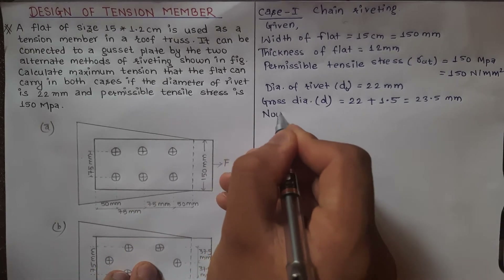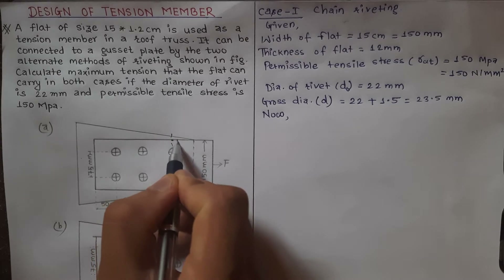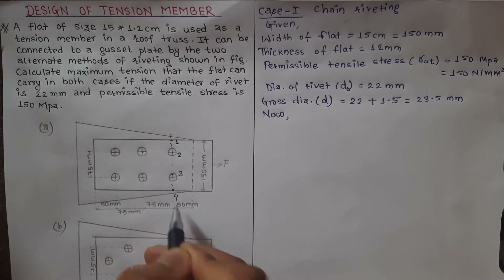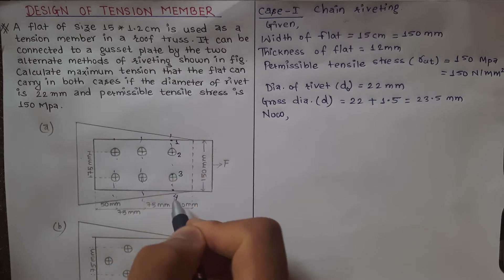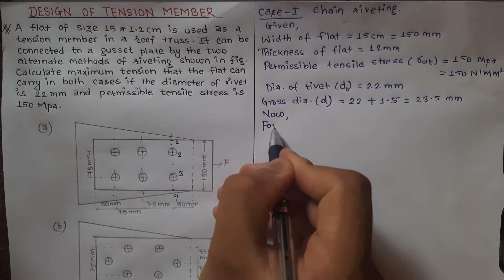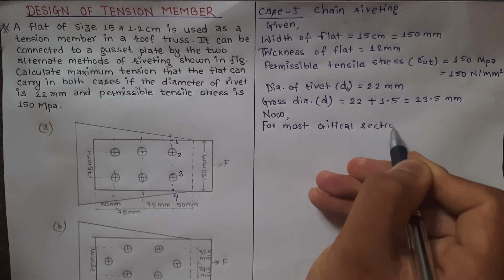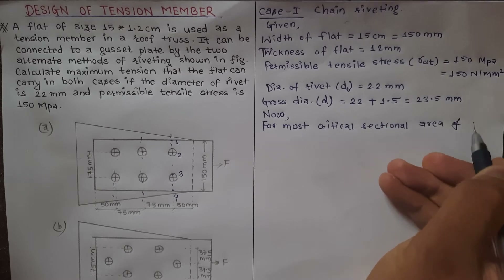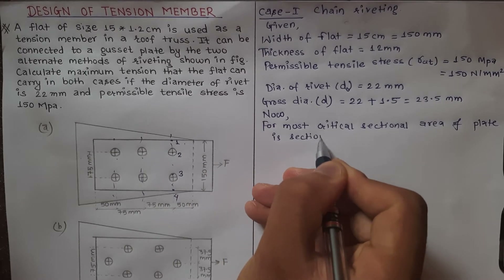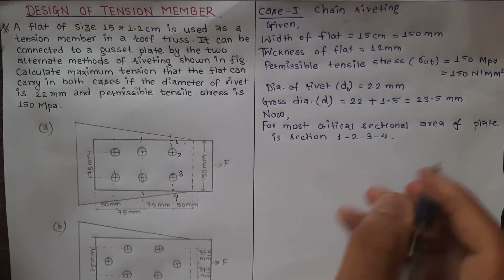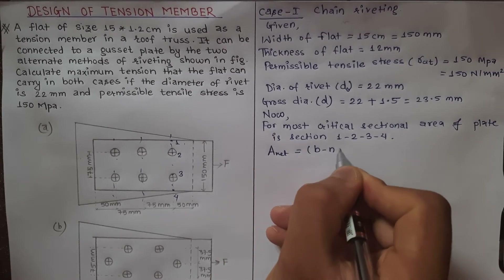Now we can see the critical section. Here we can see section 1-2-3-4. The most critical sectional area of the plate is at section 1-2-3-4. Our net cross-sectional area of the plate uses the formula: A_net = (b − n·d) × t.